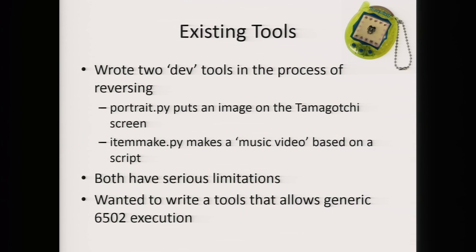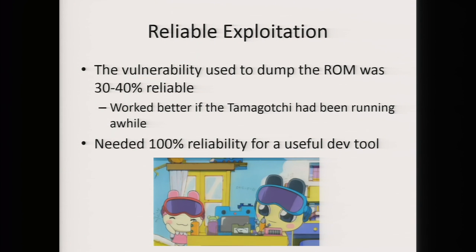The next thing I wanted to do was make some dev tools. I already had two that I'd made in the process of reversing. The first one is portrait.py, used to put images on the screen of the Tamagotchi. I also had item_make, which is what I used to make Tamagotchi music videos. But they both have serious limitations — they're both for specific things. I wanted to write a generic tool to run generic assembly. The big problem I ran into was that my exploit wasn't very reliable — about 30% to 40% reliable, and very finicky. It tended to work really well if the Tamagotchi had been running for a long time, but as soon as I started resetting it stopped working. For a useful dev tool, you need 100% reliability, so I couldn't use this exploit.